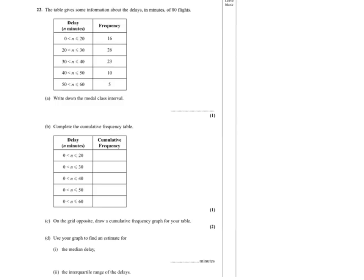So we've got five intervals: 0 to 20, 20 to 30, and so on. The one with the highest frequency is 20 less than n, less than or equal to 30.